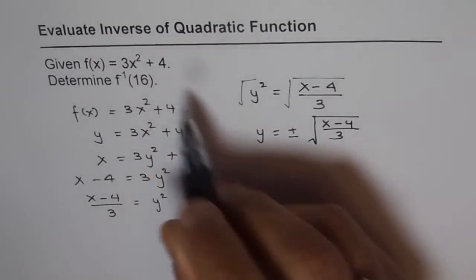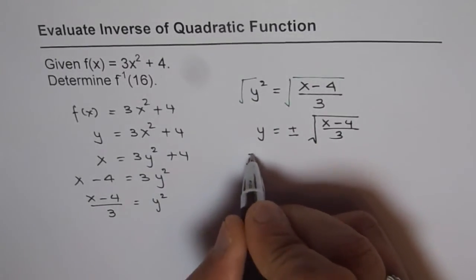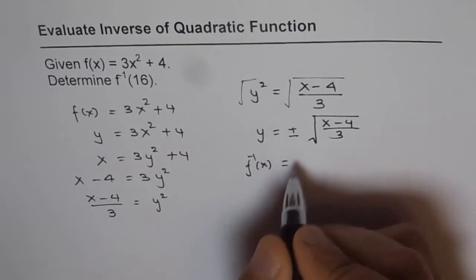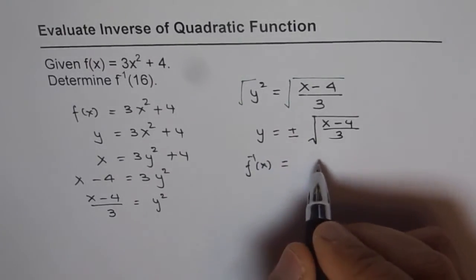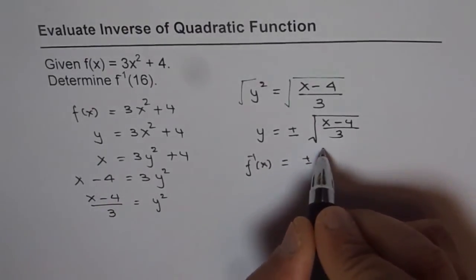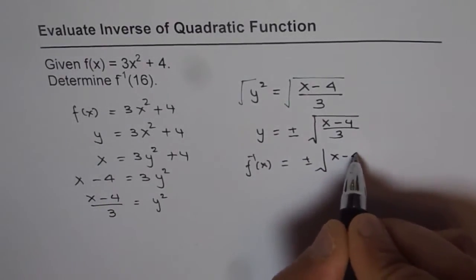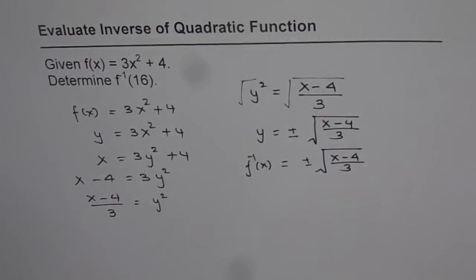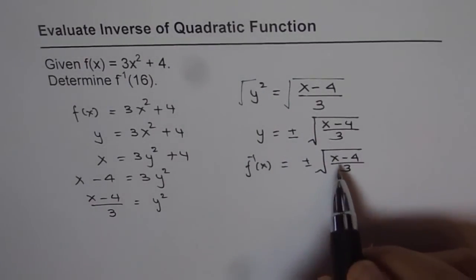And now you have your inverse of the given function. And that is f inverse. Let me write x here. But this is not really a function. f inverse is equals to plus and minus square root of x minus 4 over 3.